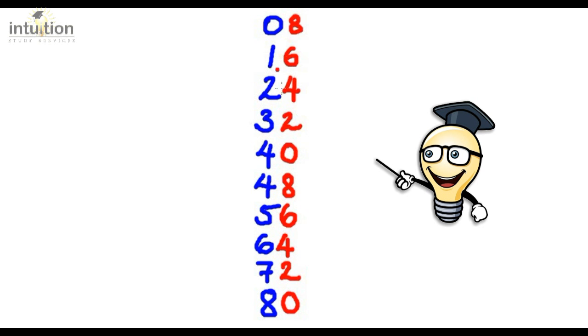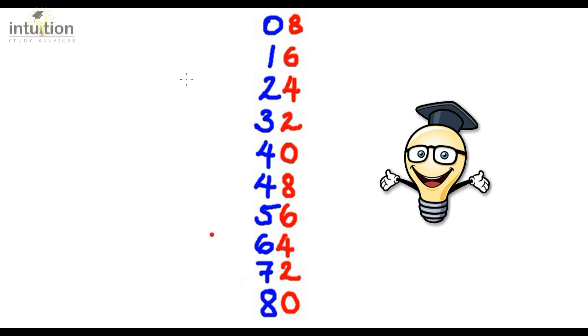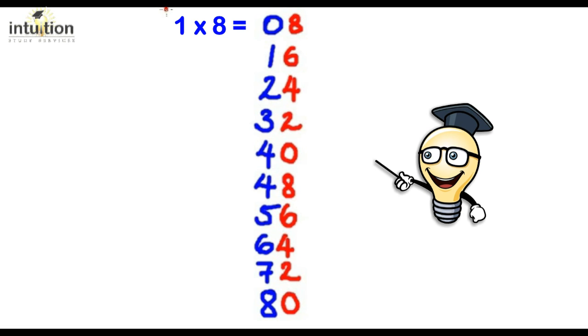And if you haven't noticed already, there's the 8x table. So we've got 1 times 8 equals 8, 2 times 8 equals 16, 3 times 8 equals 24, 4 times 8 equals 32.